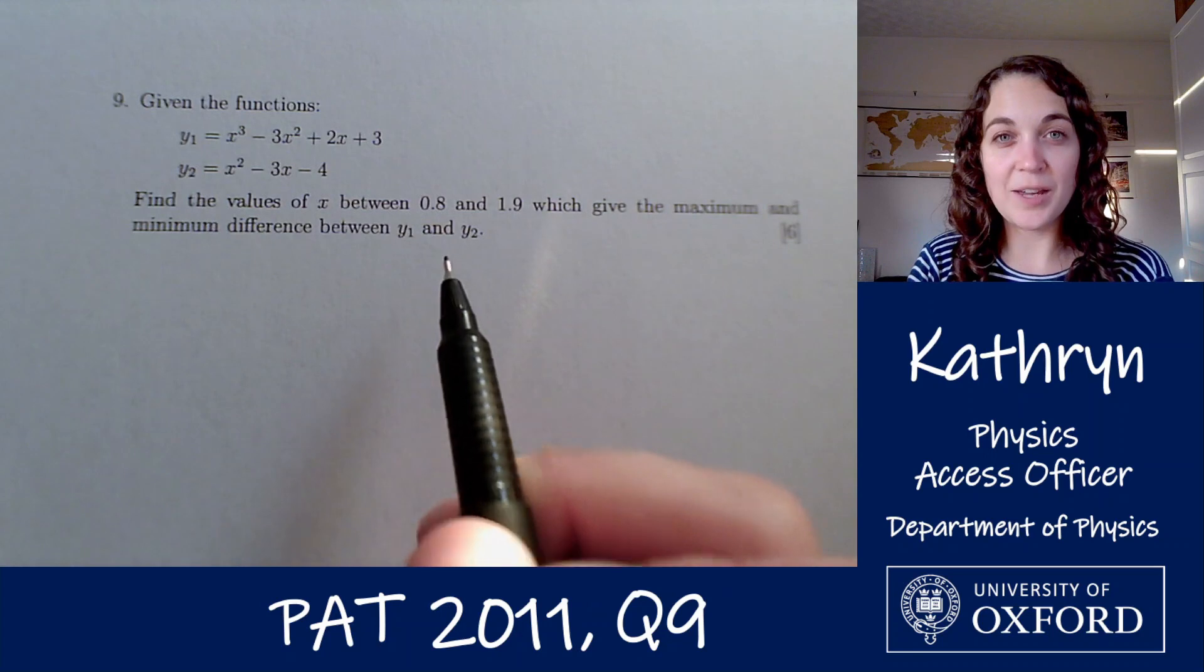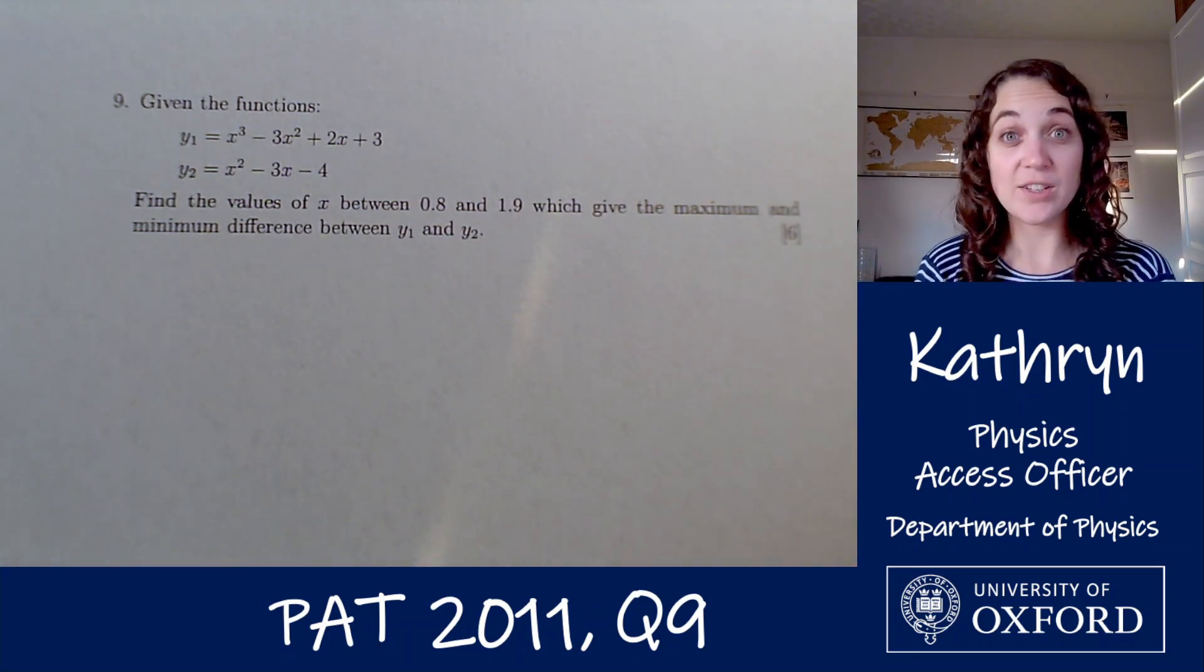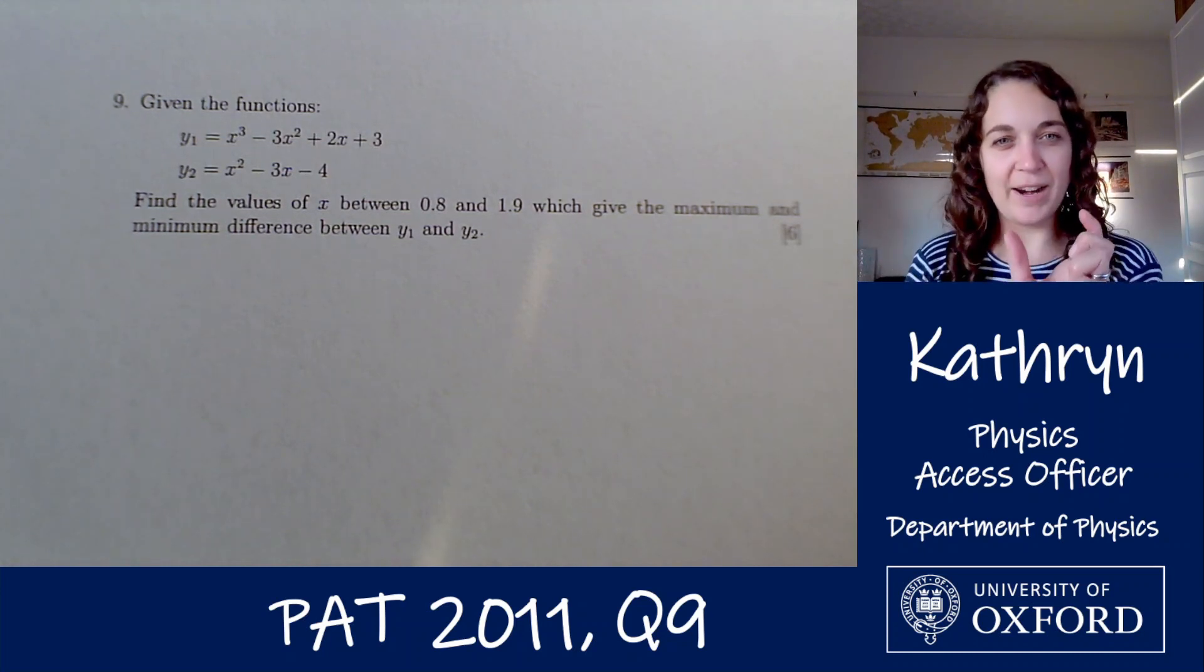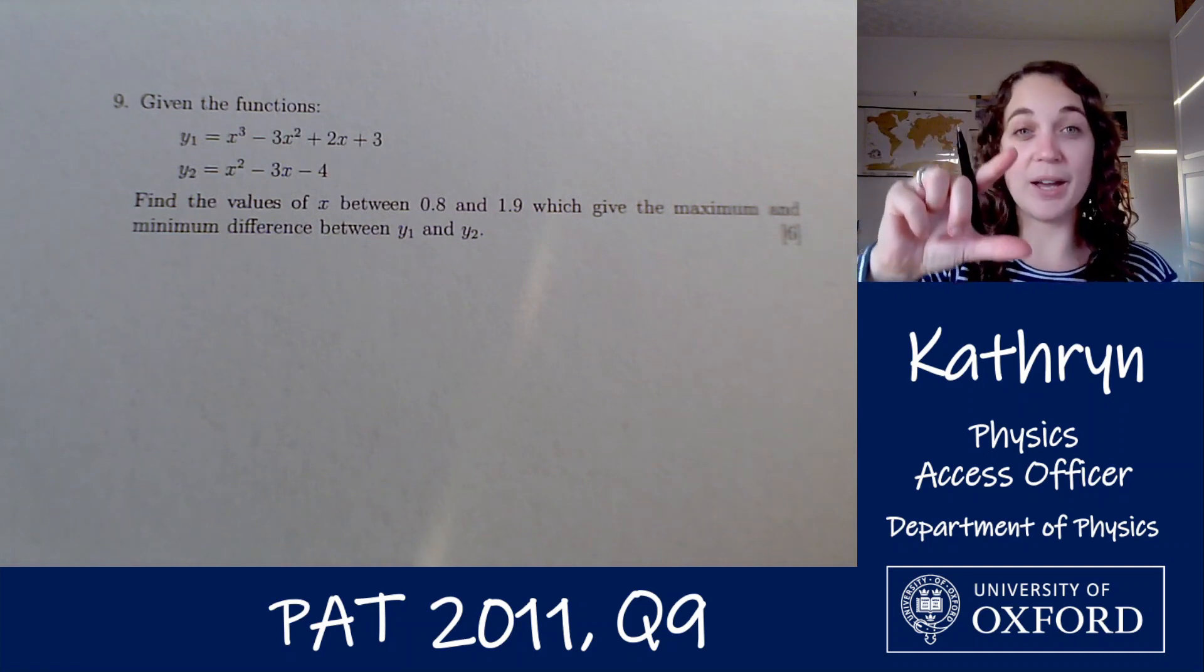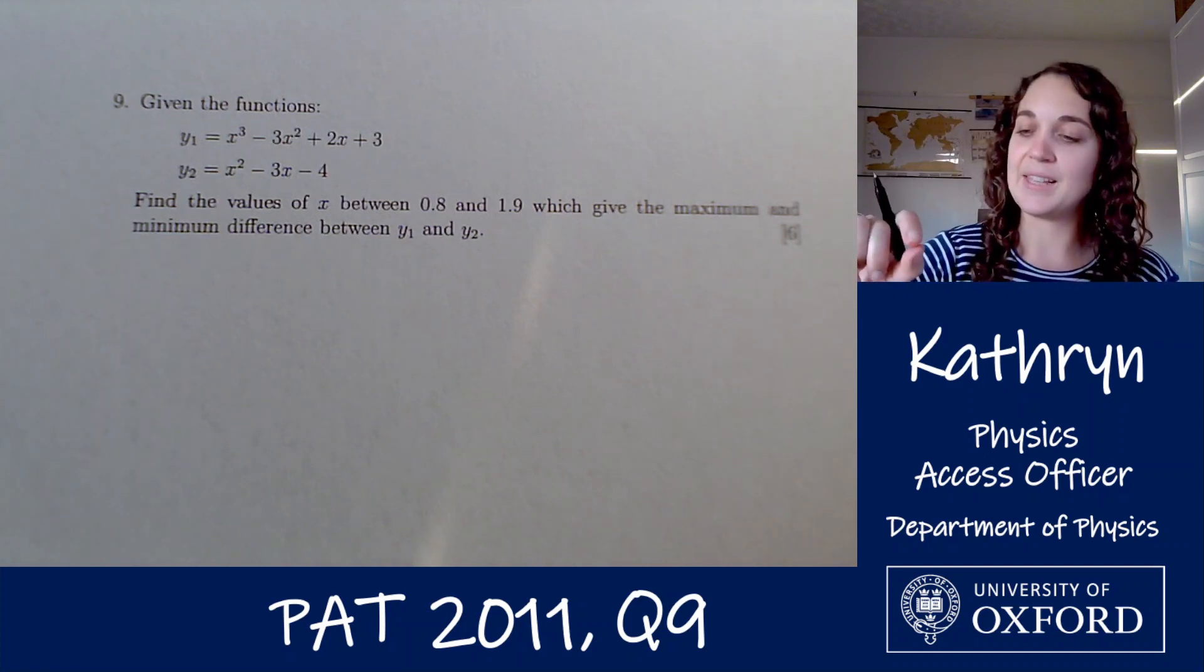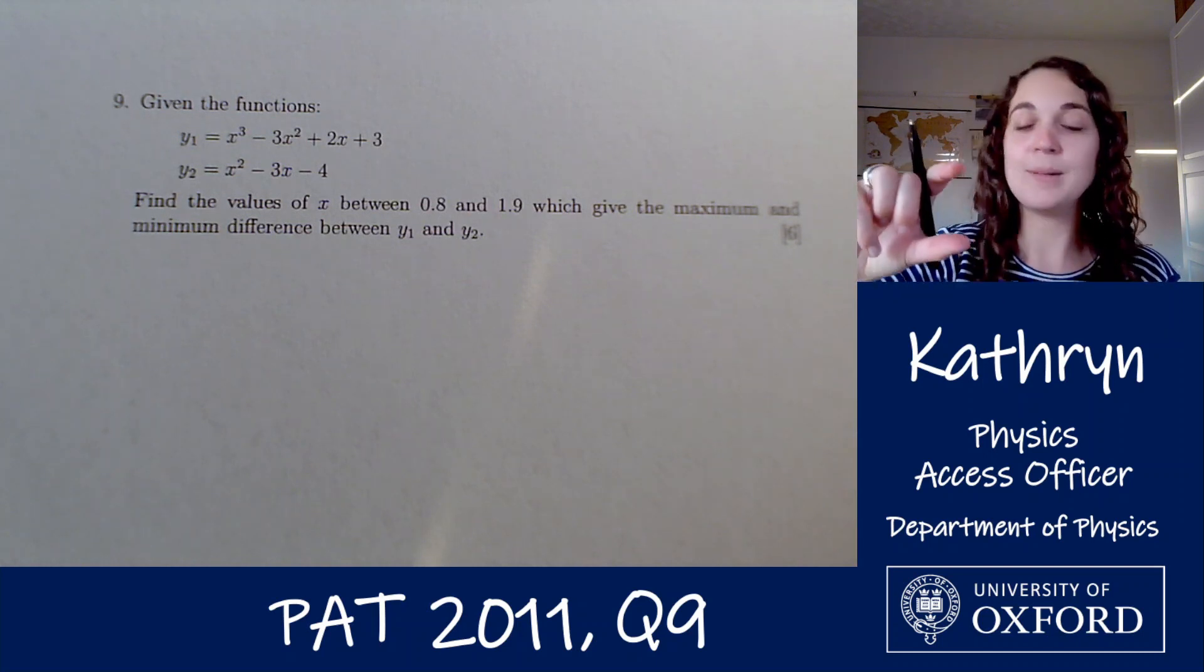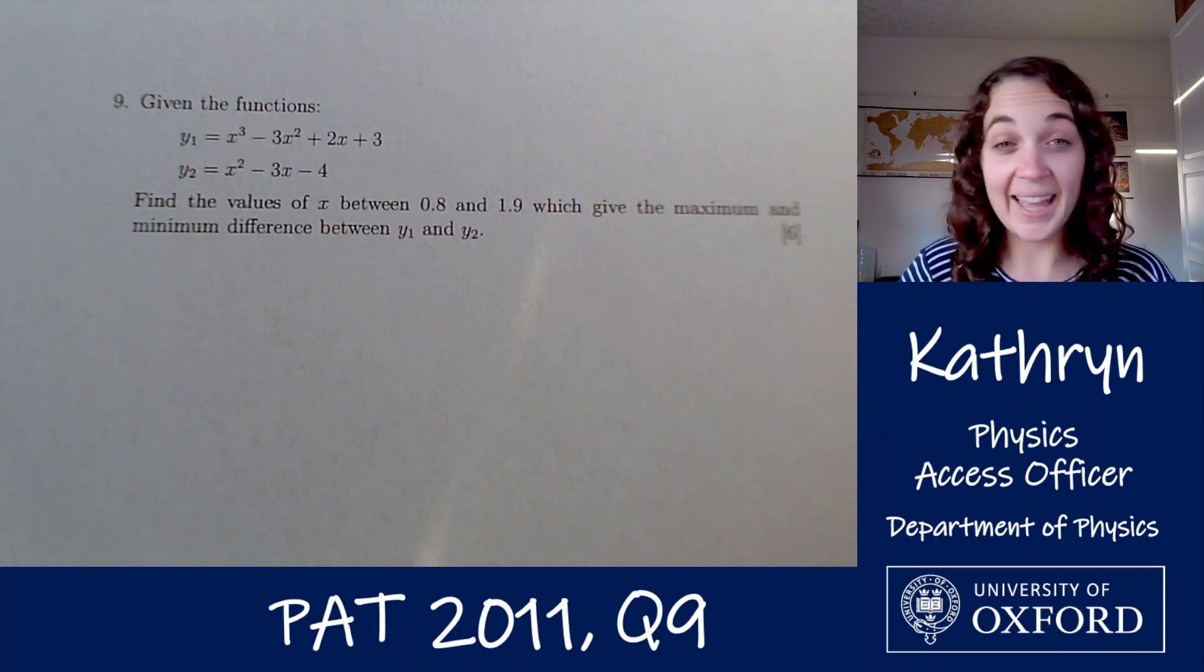So y1 is a cubic so it's going to go like that and y2 is a quadratic. So within that range of 0.8 to 1.9 the difference between those two curves is going to vary and there's going to be some point where that difference is maximum and some point where that difference is minimum and that's what we need to find.